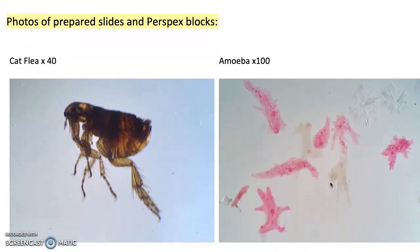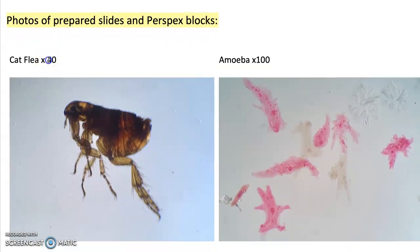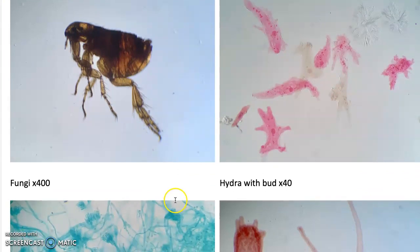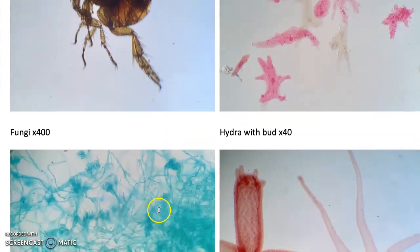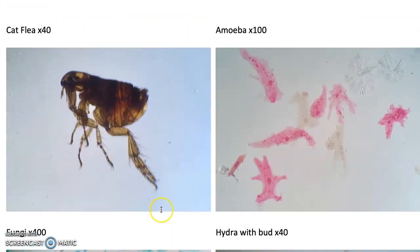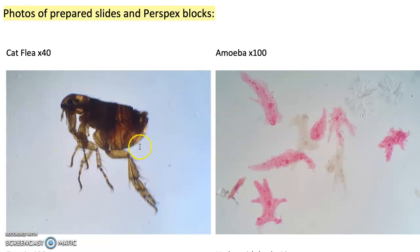The first diagram we've got here, this is a cat flea, and it was at 40 magnification. We have amoebas—I love this little one here—these are at 100 magnification. This is some fungi at 400, so you can see the difference here. To get this photo of the flea, I only needed to use 40 magnification. For the amoebas, these are under 100, and for the fungi, this is 400 times magnified.